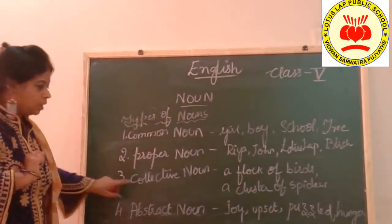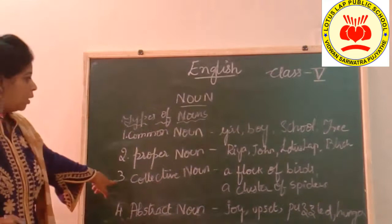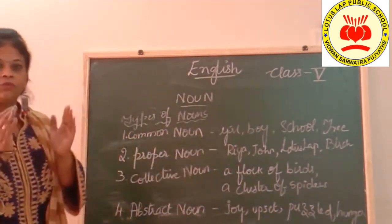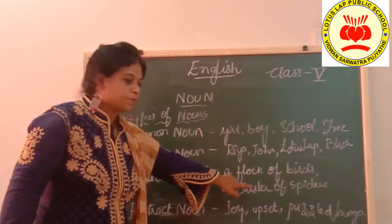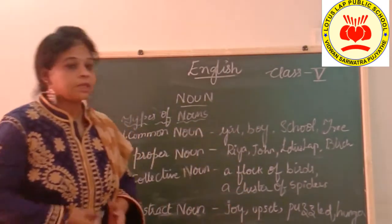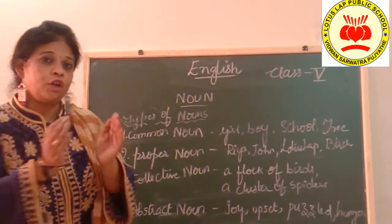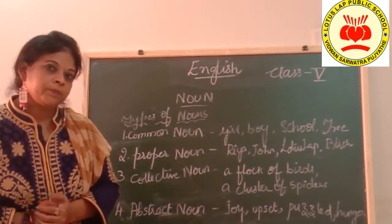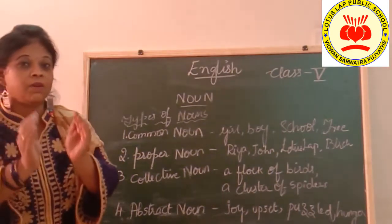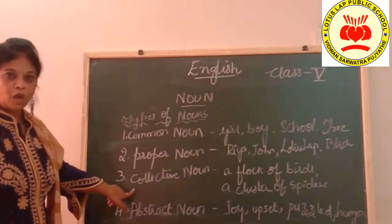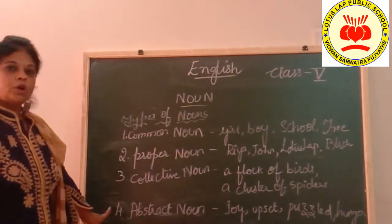Now let us move on to the collective noun. Collective means a collection — a name given to one collection. For example, a flock of birds: the flock is the collection of birds. A cluster of spiders: collection of spiders is called a cluster. More examples: army is a collection of soldiers; a bouquet is a collection of flowers. A fleet of sheep — a collection of sheep is called a fleet. A name given for a collection of things is called a collective noun.